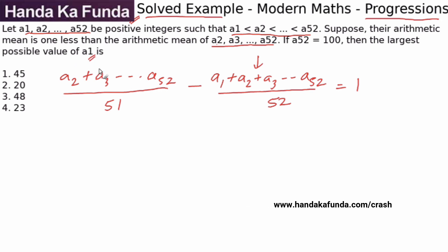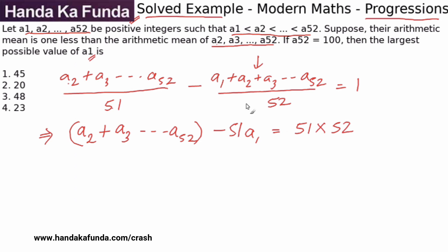Then the largest possible value of a1, well, I will try and simplify this. So what will I get? It will become 52a2 minus 51a2. So that will simply be a2 plus 52a3 minus 51a3, so plus a3. Very similarly, 52a4 minus 51a4, 52a5 minus 51a5. So this will go on till a52. But for this minus 51a1, there is no corresponding a1 term here. So this will be minus 51a1, which is actually nothing else but equal to 51 into 52. That would be the LCM here, which I have taken to the other side.